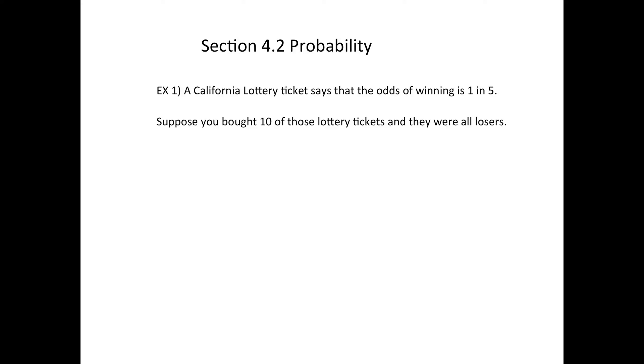Suppose, as an example, you can look on the back of California Lottery Tickets, the Scratchers, and it'll tell you what the odds of winning are. Let's say the odds of winning are 1 in 5. Suppose you bought 10 tickets because you really wanted to make sure you won something. Suppose they're all losers. If there's 10 tickets and 1 in 5 should win, you should have had 2 winners, but you didn't.